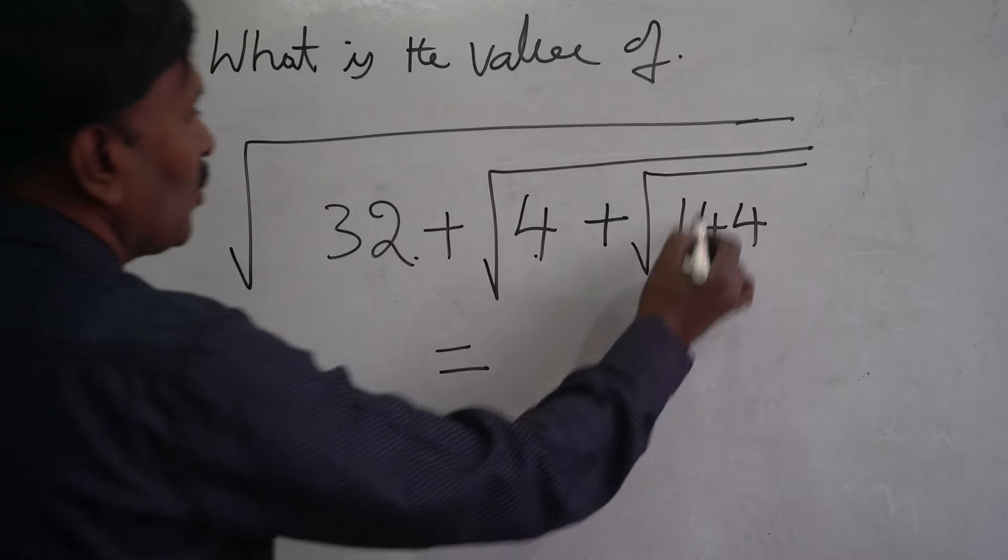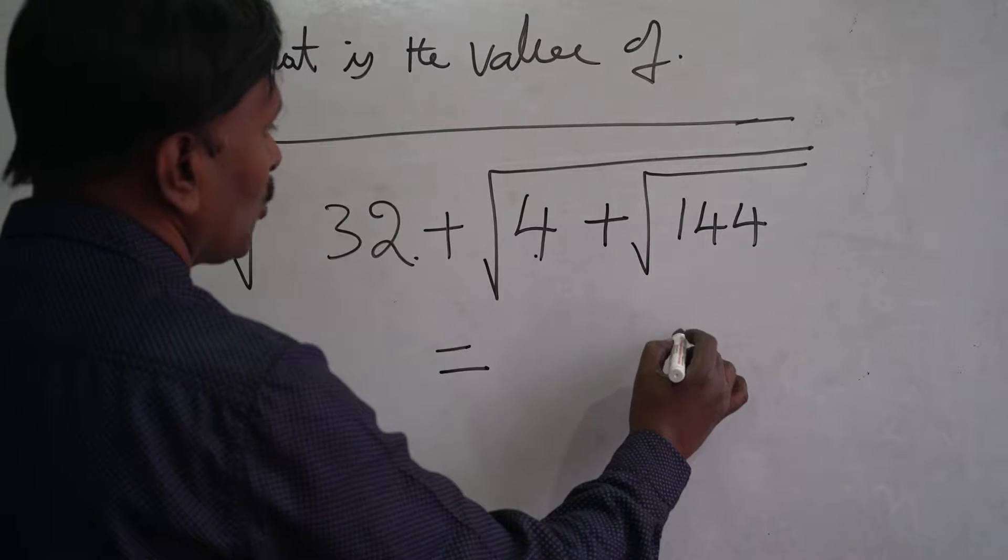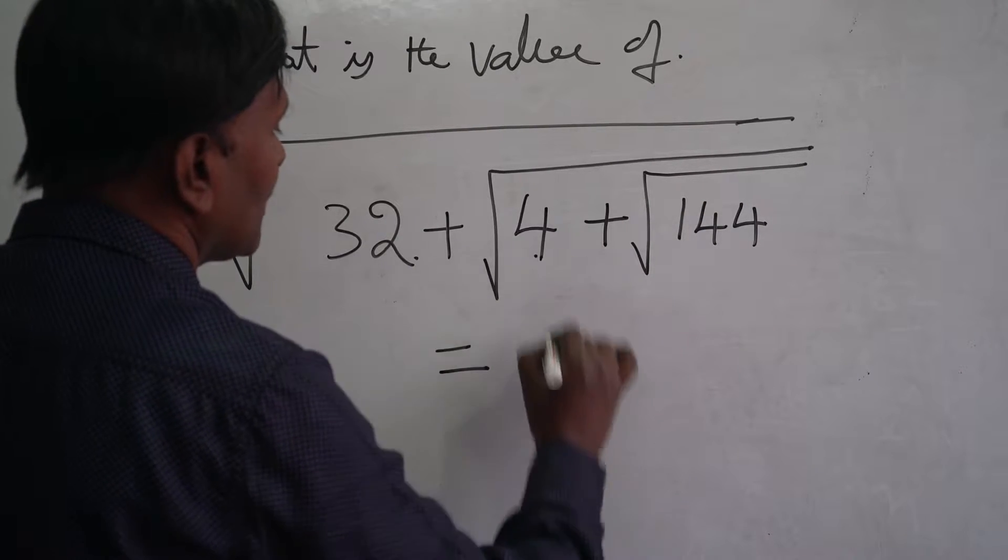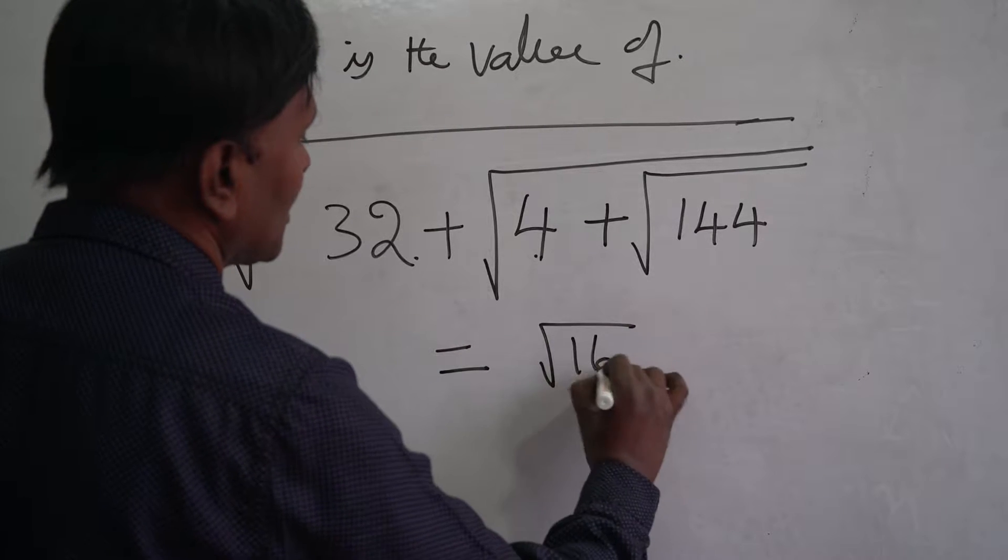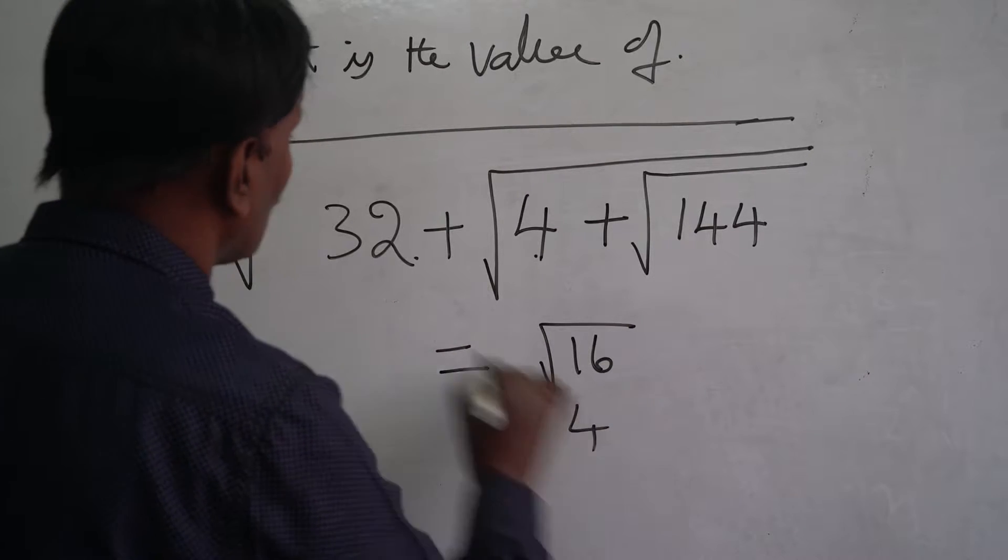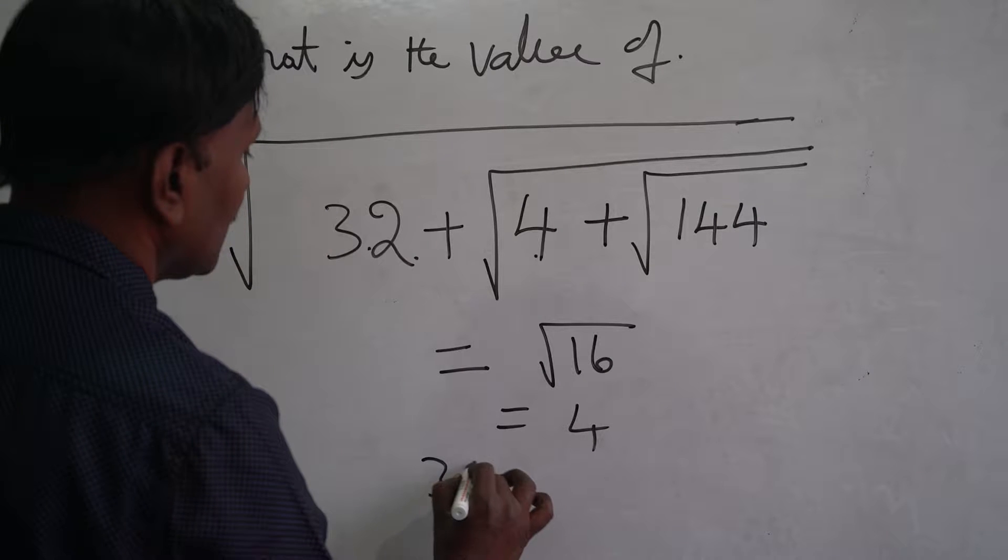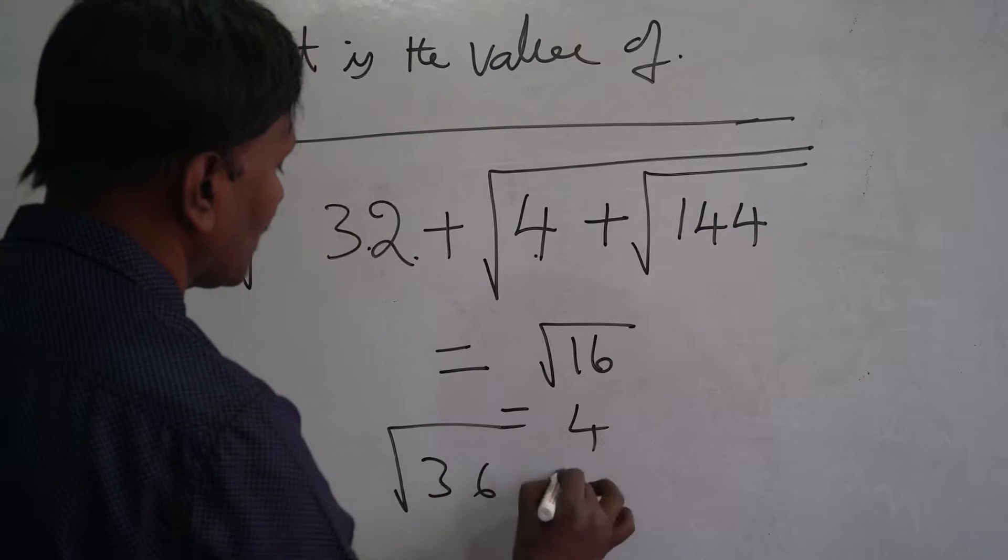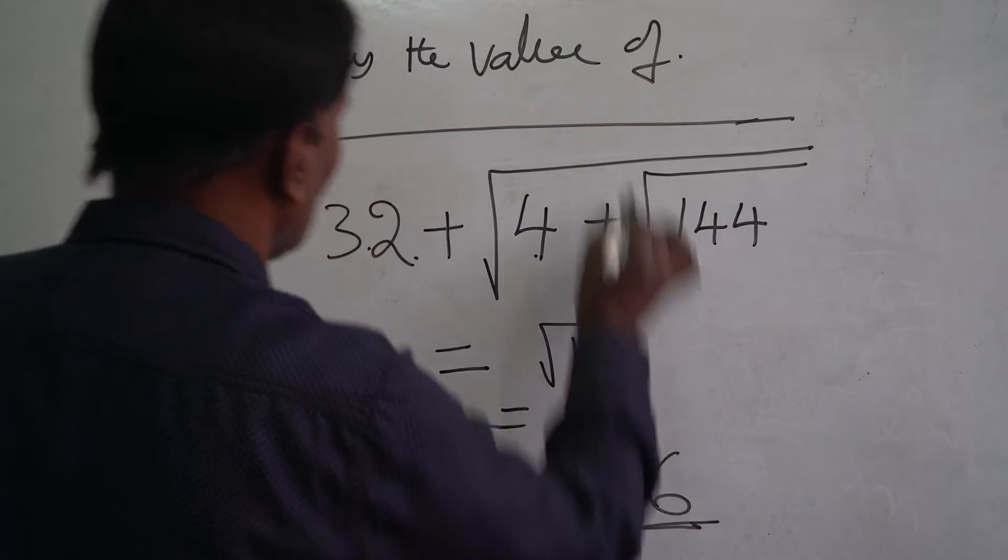Square root of 144 is how much? 12. 12 plus 4 is 16, which means root of 16. This is how much? 4. So 32 plus 4 is 36. Square root of 36 is how much? 6. So the value of this one is 6.